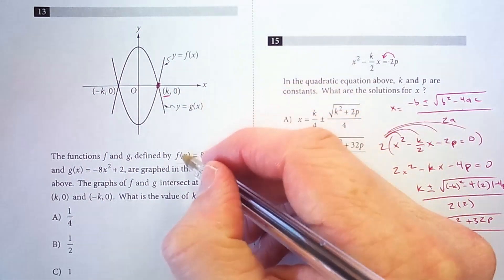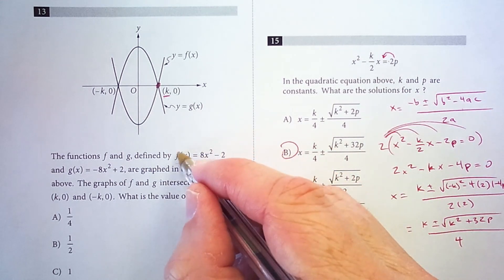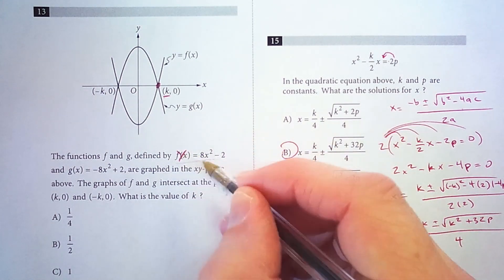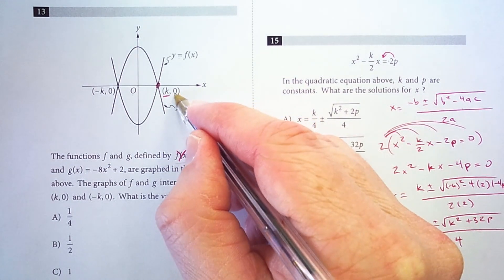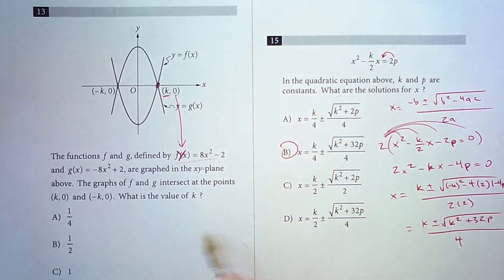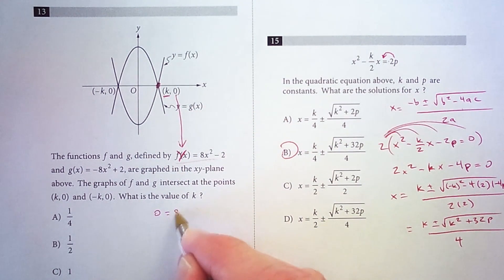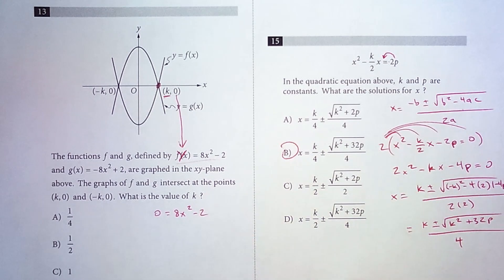So f(x), this is function notation, but it's the same as y. And at this point, at this x-intercept, y is 0. So I have 0 equals 8x squared minus 2.